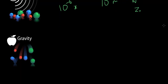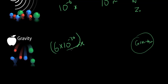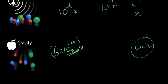Gravity — the force we thought we knew the most — is actually the least understood of all these forces. The reason why is that we haven't found its force carrier particle. We think it's called the graviton, but we haven't found evidence of that yet. Because gravity is so weak, it's really hard to find. The strength is an incredibly small fraction of X — it is extremely weak.